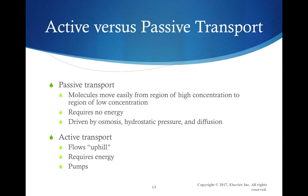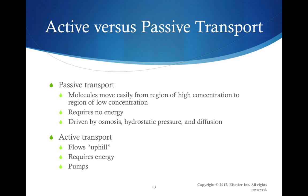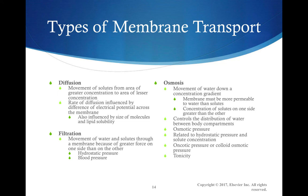Two basic processes of conducting cellular processes within the body: one is passive transport and one is active transport. The important piece is that in the process of active transport, we actually need energy to make the process work, and it works against the natural gradients that are driven through the movement of water and pressures throughout the body, which is an example of passive transport. Here are some good examples of the types of membrane transport that go on within the body. Here's a nice picture of the sodium pump, which discusses the action potential of the cellular membrane.